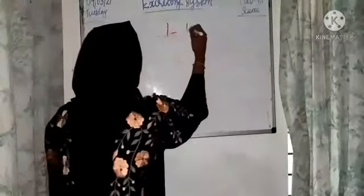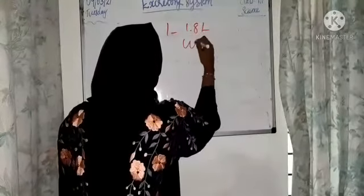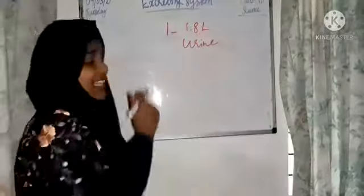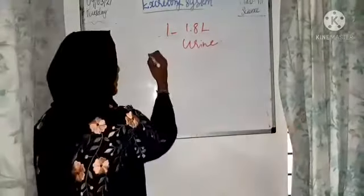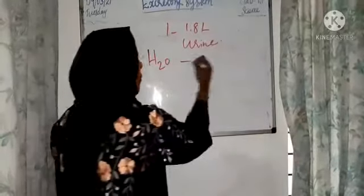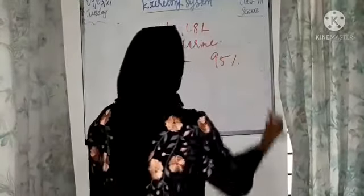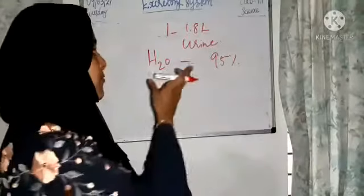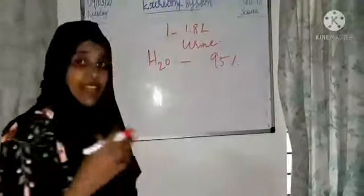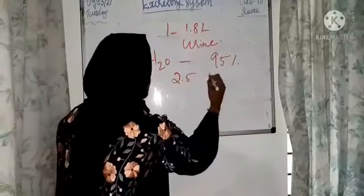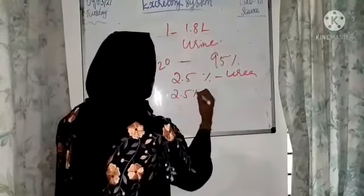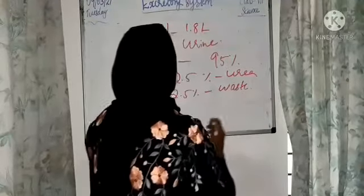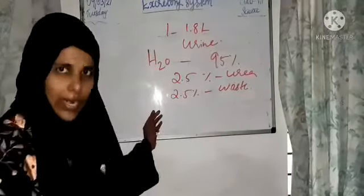Did you know, children, that an adult passes 1 to 1.5 liters of urine per day? So let's check the content of urine. Urine consists of almost 95% water. The rest is 2.5% urea and 2.5% waste. These are the main contents of urine.